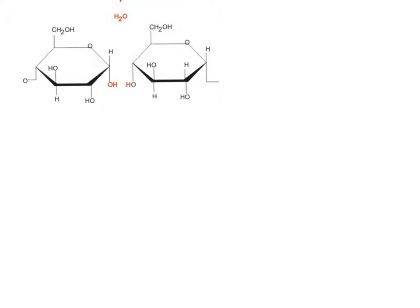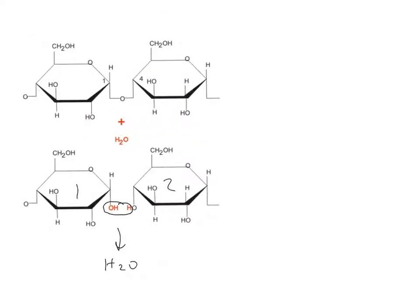Here we have an example where the dehydration reaction can link two sugars together. So I have sugar number one and sugar number two here, and you can see that we have the possibility of a dehydration reaction. That OH group from one monomer can bind to a hydrogen linked on the other one, and that will release water, and that will then cause these to be linked together.